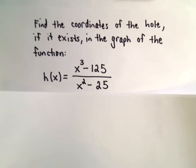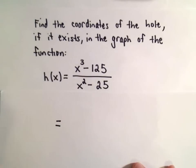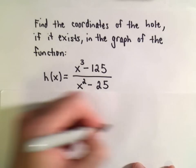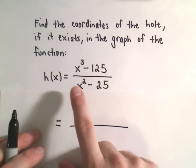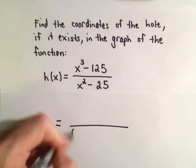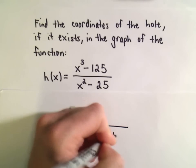There are a couple different ways you can go about thinking about this. One way to do it is to factor the numerator and denominator and look for common factors. So I'm actually going to do that. The denominator, that's a difference of perfect squares. X squared minus 25, we can write that as x minus 5 times x plus 5.